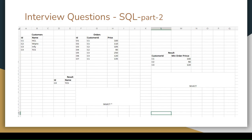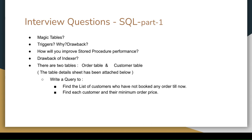There is a customer table and an order table. The question was: Write a query to find the list of customers who have not booked any order till now. So basically there are two tables - one is the order table, another is the customer table. There is a relation between both of them.